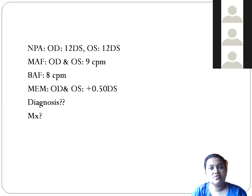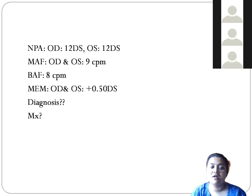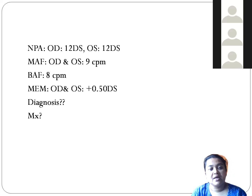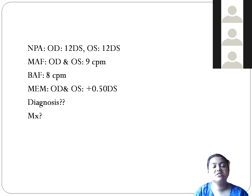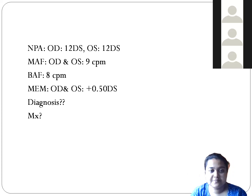When the fusion target is printed on a white page (opaque sheet), the therapy trains convergence. However, when the same target is printed on a transparent OHP (overhead projector) sheet, it is used to train divergence. The key difference is the transparency of the material used.